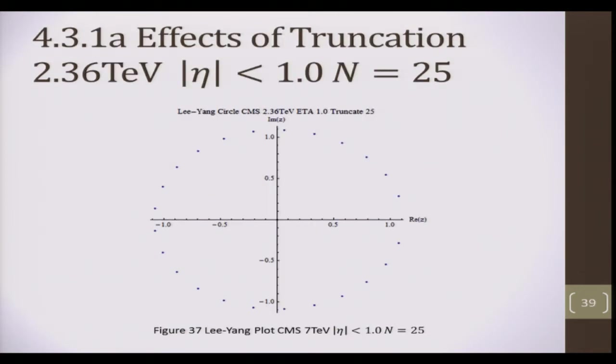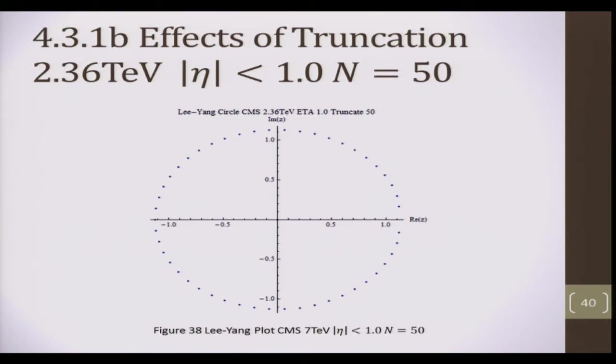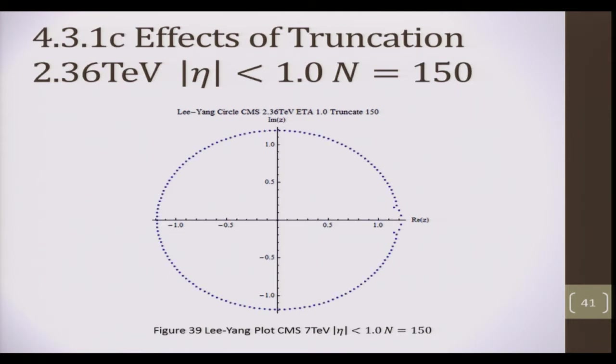I also studied the effects of truncation on the Lee-Yang zeros. For fixed energy and fixed pseudo-rapidity cut, for a low truncation cutoff, N is 25, the Lee-Yang plot looks something like this. At a larger truncation cutoff for N, still no ear. But at a larger truncation yet still, you see a very obvious ear structure.